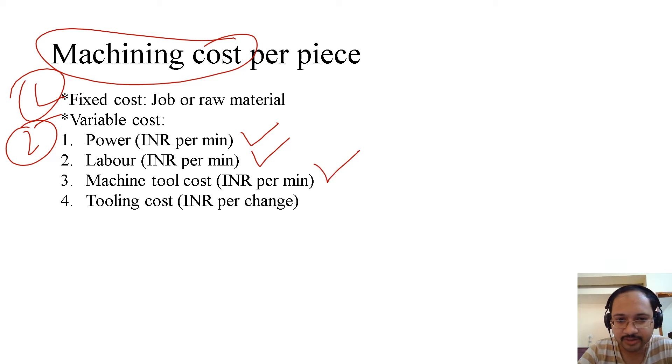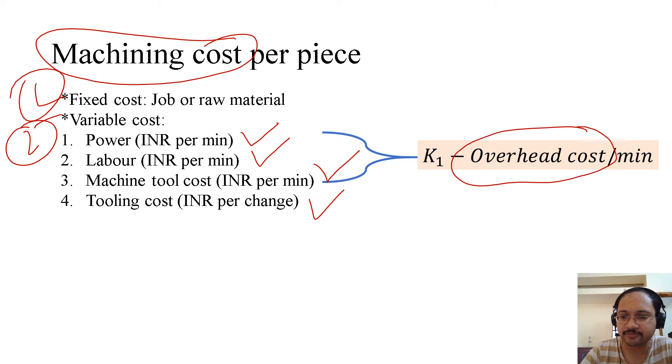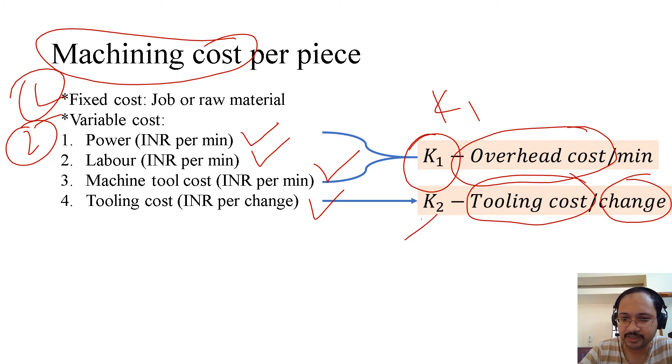Then the machine tool cost, that is also INR per minute. We will explain the machine tool cost. And then finally, the tooling cost. When we are changing the tool, so what cost is involved? What is the INR per change? Now the first three, they come up to the overhead cost per minute, also denoted by K1, which means rupees per minute. The second one is the tooling cost, which is per change, which is K2, that is rupees per change.